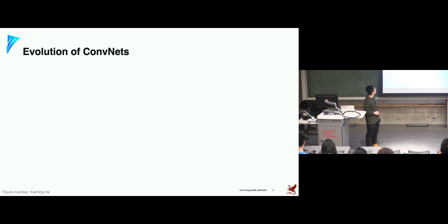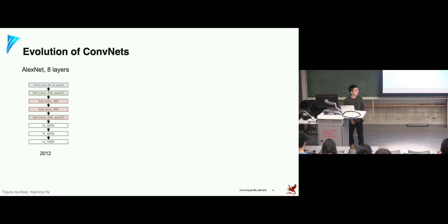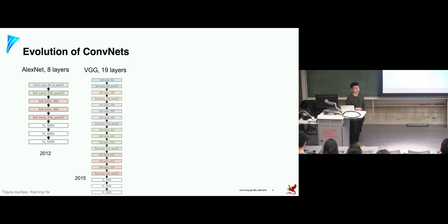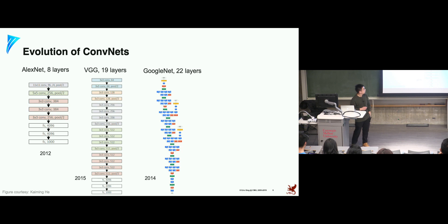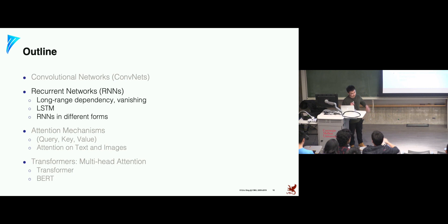With this basic convolutional building block, there are many variants of convolutional networks. Starting around 2012, we have AlexNet, one of the first to place in the ImageNet image classification competition. Later we have VGG, which is much deeper than AlexNet, and GoogleNet with 22 layers. The state of the art is usually ResNet, which can easily go to hundreds of layers, where each layer is a convolutional layer. You just need to know about the three basic properties of the architecture.